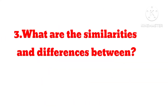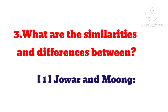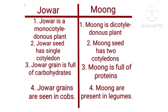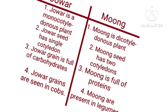Question 3: What are the similarities and differences between Jawar and Moog? Differences: 1. Jawar is a monocotyledonous plant; Moog is a dicotyledonous plant. 2. Jawar seed has a single cotyledon; Moog seed has two cotyledons. 3. Jawar grain is full of carbohydrates; Moog is full of proteins. 4. Jawar grains are seen in cobs; Moog are present in legumes.